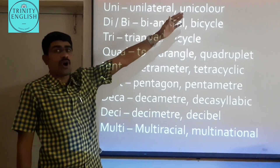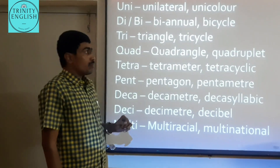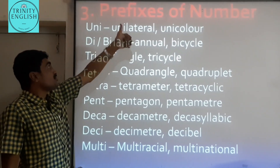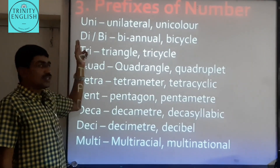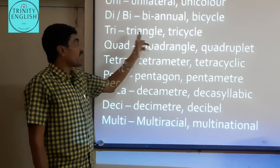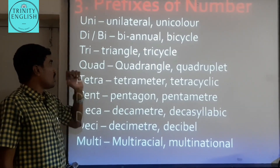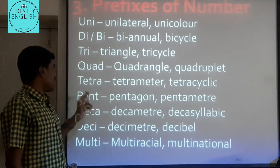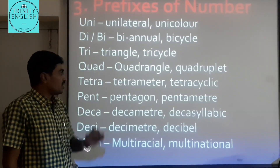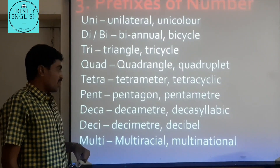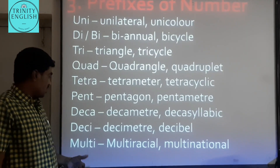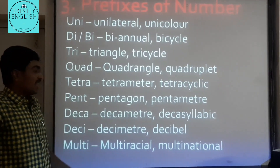Next are the prefixes of number. 'Uni-' means single: 'unicolor.' 'Di-' or 'bi-' means two: 'biannual' and 'bicycle.' 'Tri-' means three: 'triangle' and 'tricycle.' 'Quad-' means four: 'quadrangle' and 'quadruple.' 'Tetra-' gives 'tetrameter.' 'Pent-' means five: 'pentagon' and 'pentameter.' 'Deca-' gives 'decameter.' 'Deci-' gives 'decimeter' and 'decibel.' 'Multi-' gives 'multilateral' and 'multinational.'